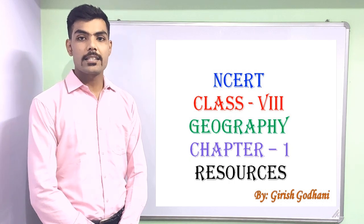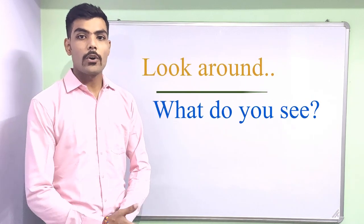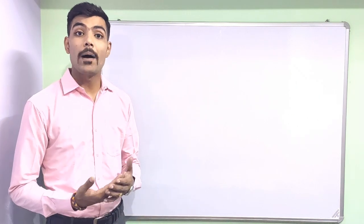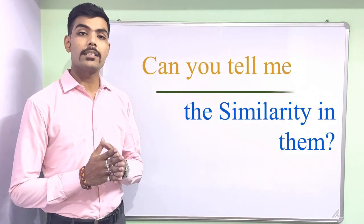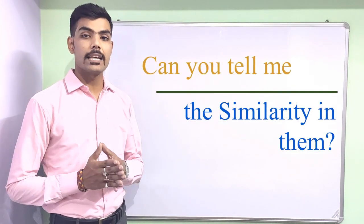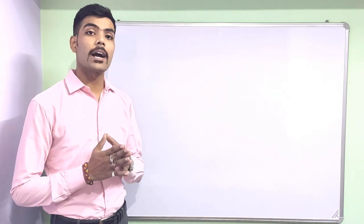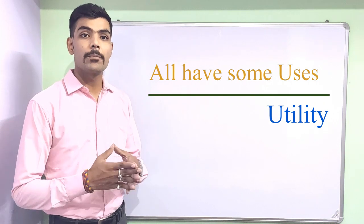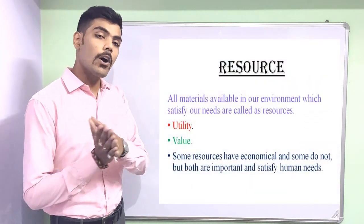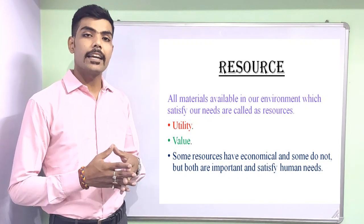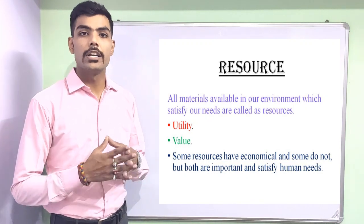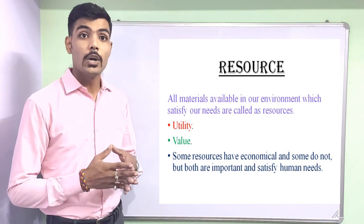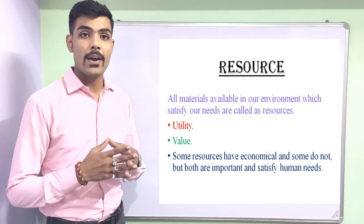Before we start discussing about the chapter, let's look around ourselves. What do you see? We see water, electricity, mobile phones, etc. Can you tell me what is the similarity in all these things? Yes, these all have some kind of use — in other words, some kind of utility. That's why these all things are resources. Anything that has utility and value is called a resource, and anything that has utility will surely have some or the other value.